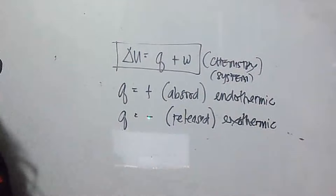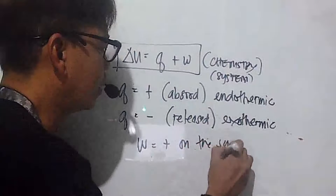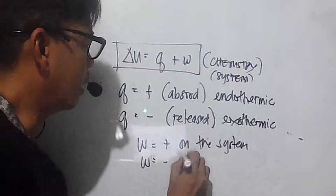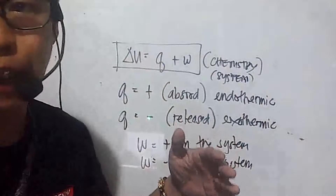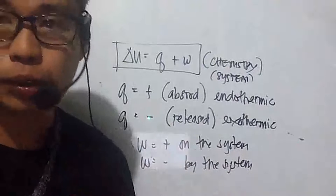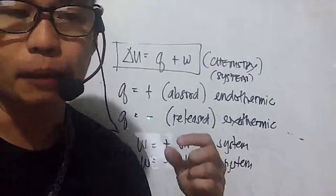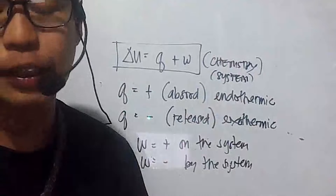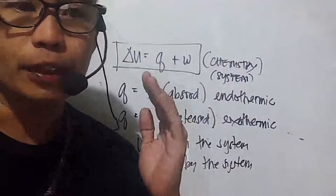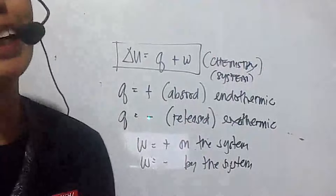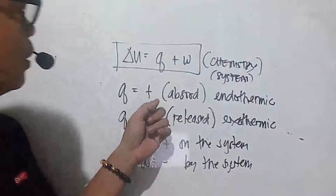For work in chemistry: work is positive when it is done on the system, and work is negative when it is done by the system. There is one law of thermodynamics but three equations we use — one for chemistry and one for physics. In chemistry we look at the system's point of view; in physics we look at the surroundings' point of view. If the system gains energy, the surroundings lose energy, and vice versa.